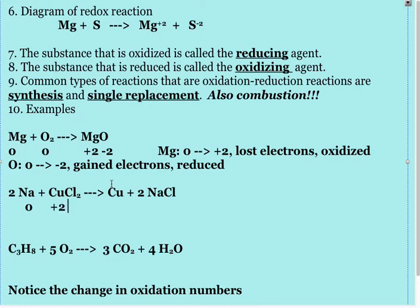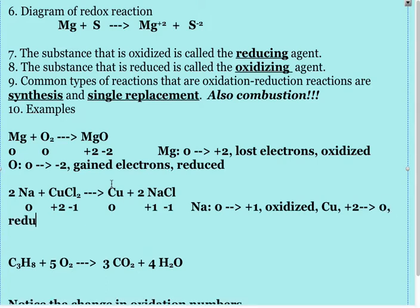And chlorine is minus one. So sodium goes from zero to plus one. It loses electrons. It's oxidized. And copper goes from plus two to zero. It gains electrons, and it is reduced.